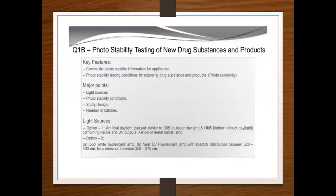Regarding ICH photostability testing of new drug substances and products, there are key features and major points covering light sources. It covers photostability information required for regulatory applications, and defines photostability testing conditions for exposing drug substances and products.